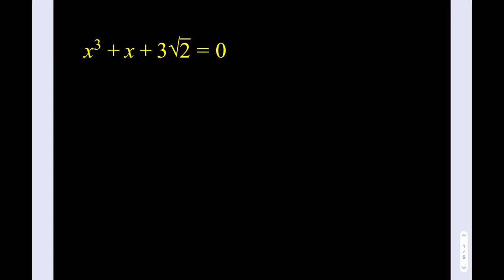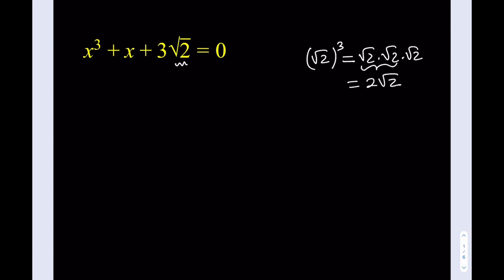I'm going to manipulate this equation so that I can get both the x and the x cubed. If you consider square root of 2, what is square root of 2 cubed? It is square root of 2 times square root of 2 times square root of 2, which by definition equals 2 times the square root of 2. How does that observation help me solve this problem?